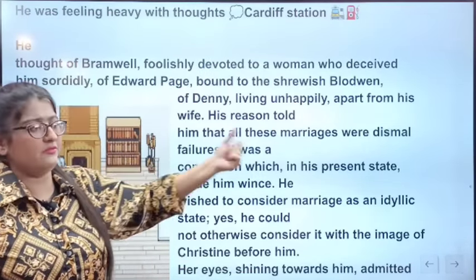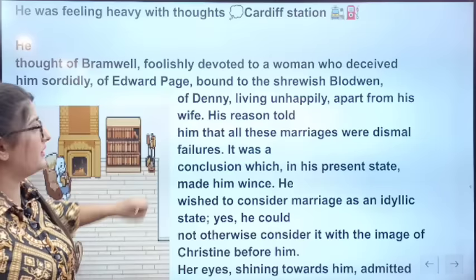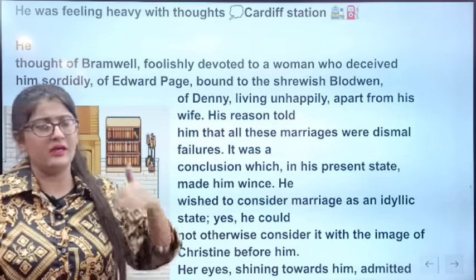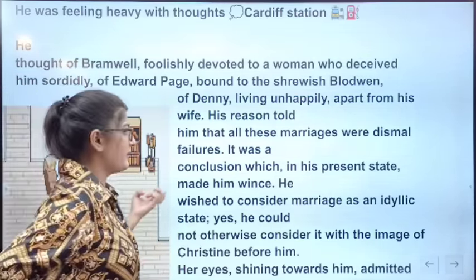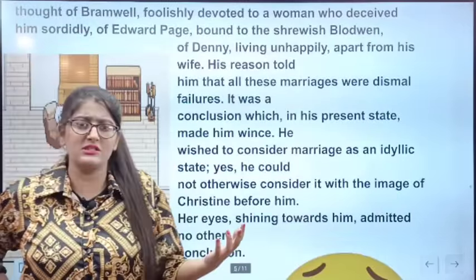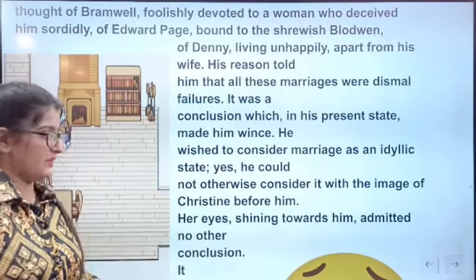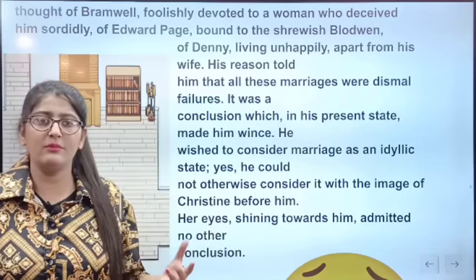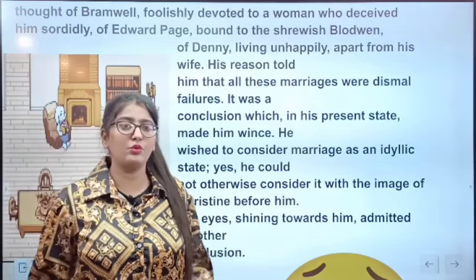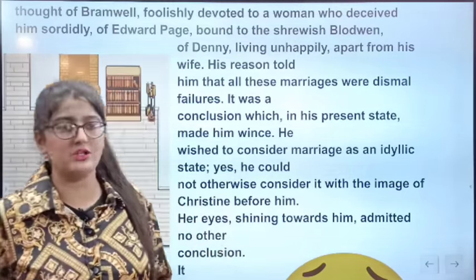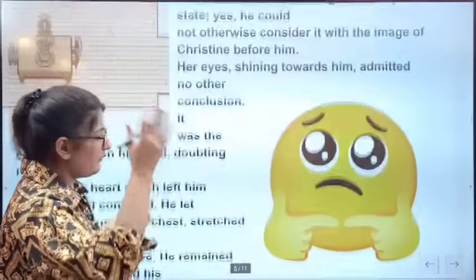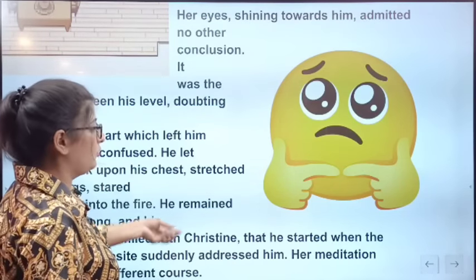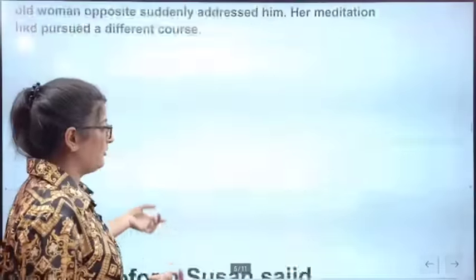He thinks of two or three people he knows whose marriages did not work — including Dr. Edward Page, whose wife ditched him. He thinks that many marriages don't work properly. But then, when he thinks specifically about Christine, he says he can only imagine Christine as his wife — he decides he will marry her.